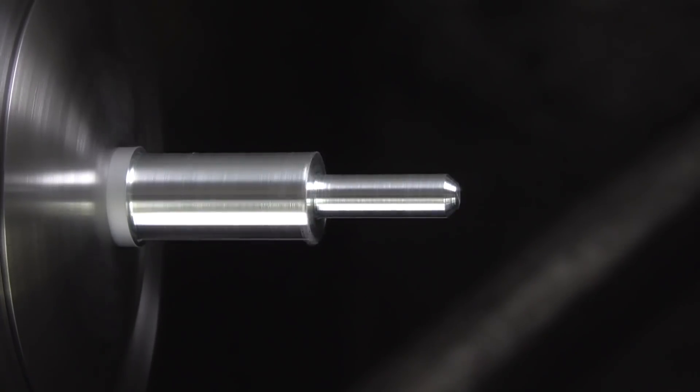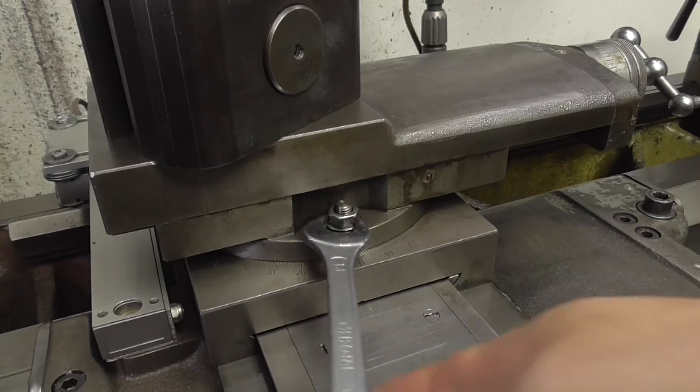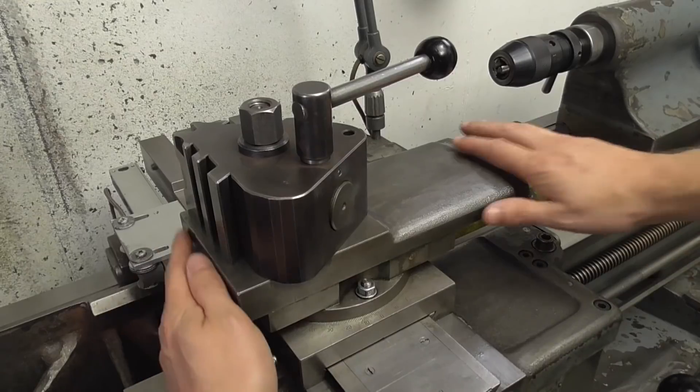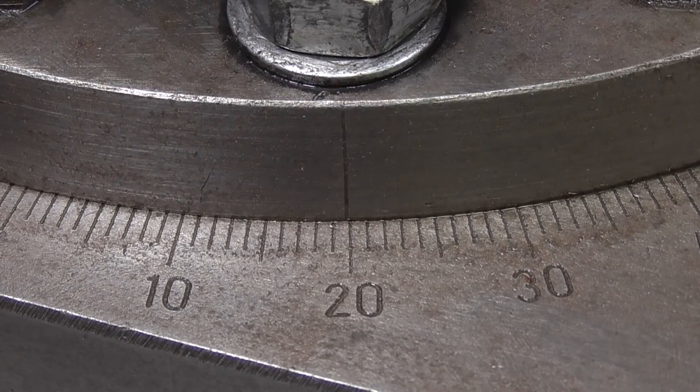I want to turn a cone now to smoothly connect both diameters. Let's set up the machine for that. First I need to slightly loosen both knobs from the top slide, turn it to the needed angle, 20 degrees in this case, and tighten both knobs again.